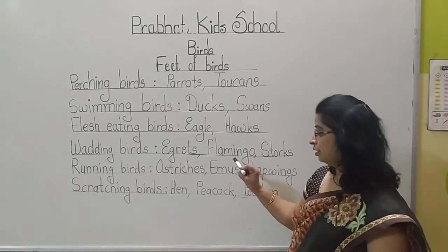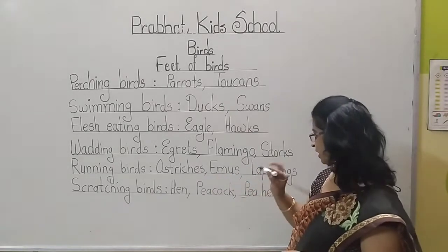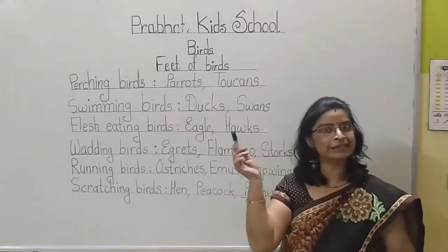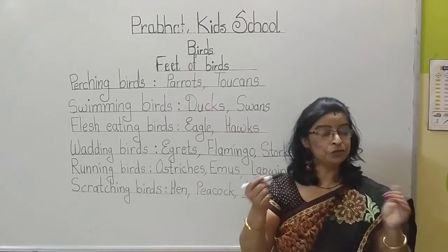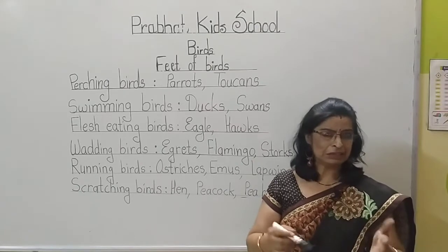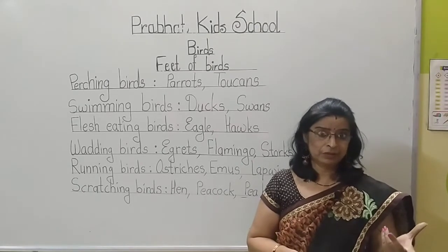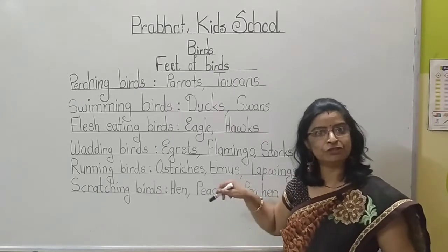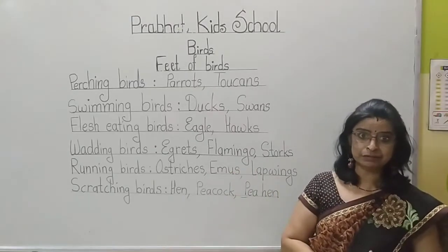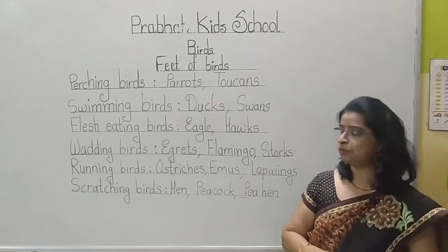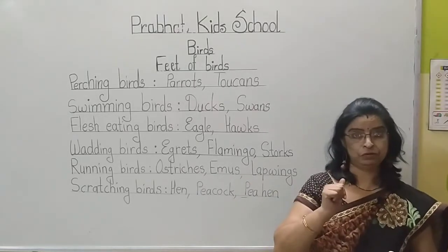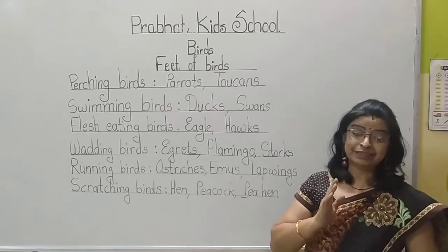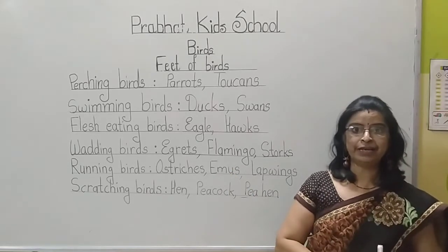Such birds are ostriches and emus. Then lapwings — you may have observed the lapwing bird; it always makes a 'tu-tu' sound. If you find it in your surroundings, observe that bird. That bird also has long legs and with the help of these feet it runs fast. Ostriches and emus can run at 50 to 55 km per hour.